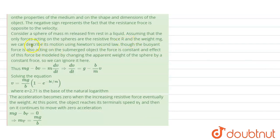Consider a sphere of mass m released in a liquid. Several forces act on the sphere: the resistive force and the weight. We can model this using Newton's second law of motion. There would also be a buoyant force, but we can ignore it. The net force would be mg minus bv, since the resistive force acts in the opposite direction. Net force equals mass times acceleration, and acceleration can be written as dv divided by dt.